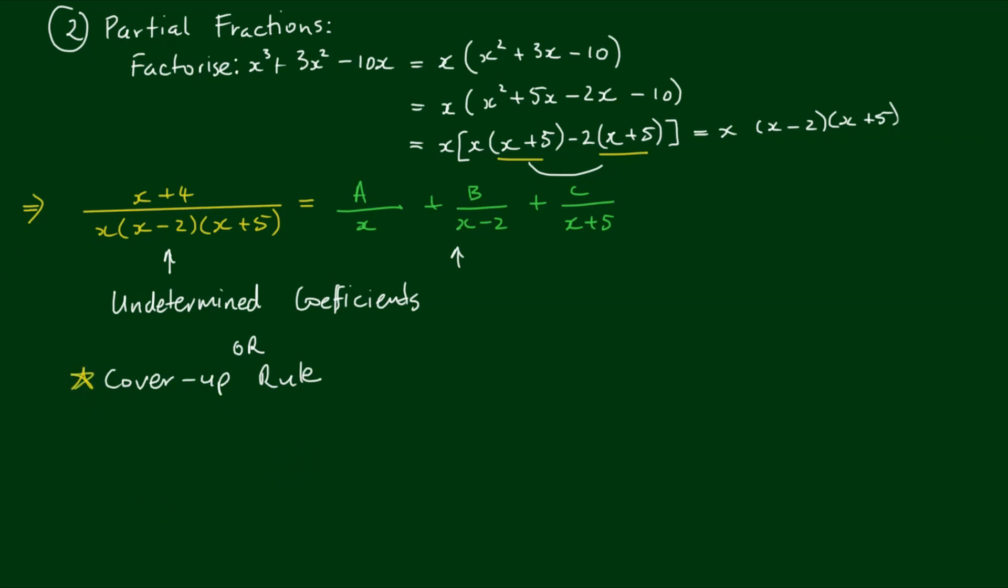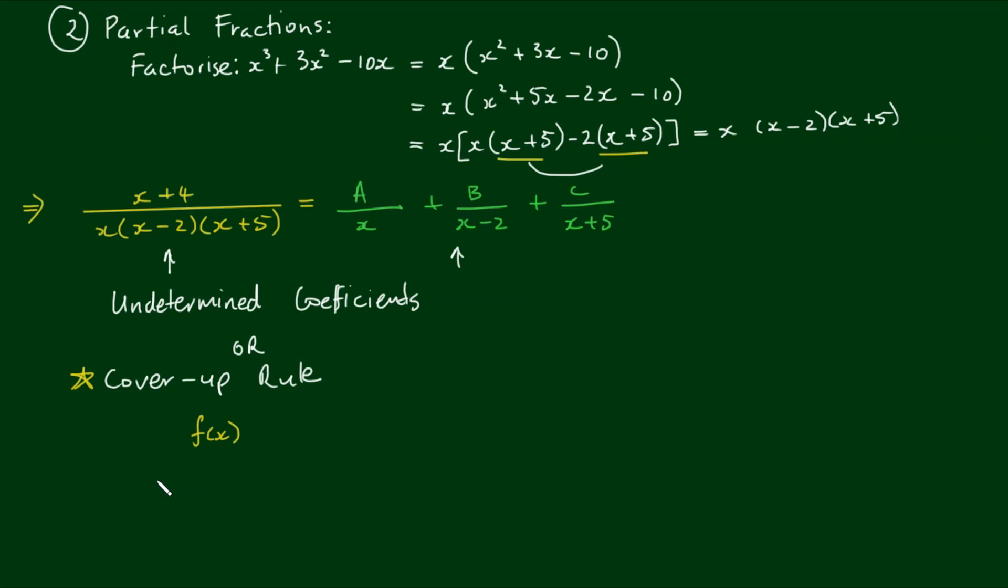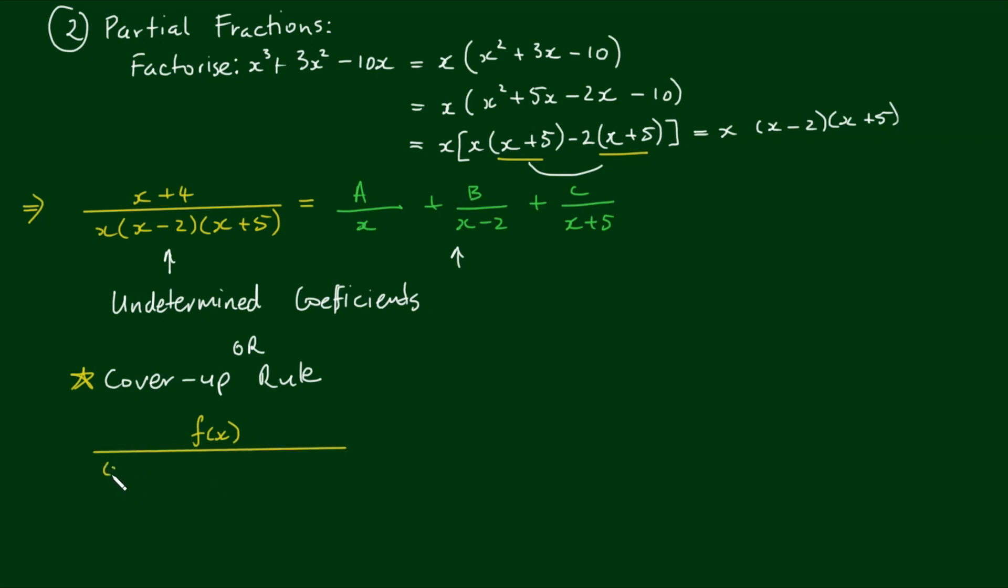The cover-up formula generally works for any partial fraction where we can express it as f of x over x minus a times x minus b times x minus c. In our case, f of x equals x plus 4, and we can write x minus 0 times x minus 2 times x minus negative 5.